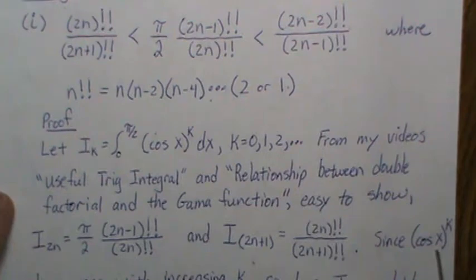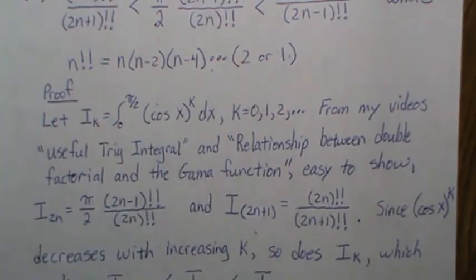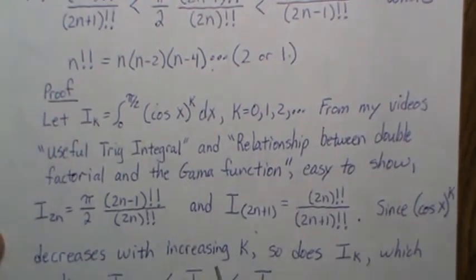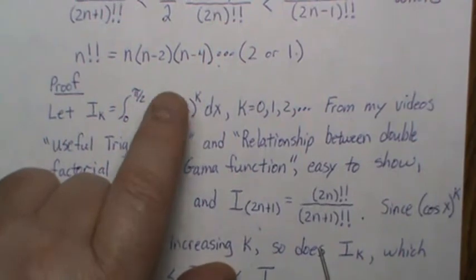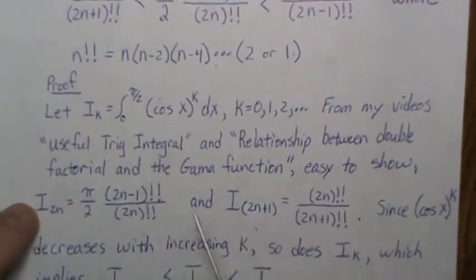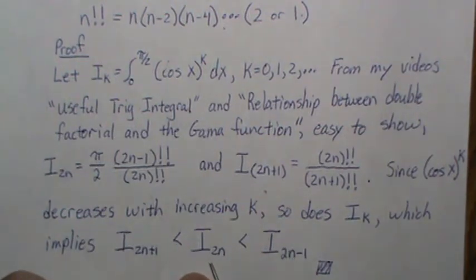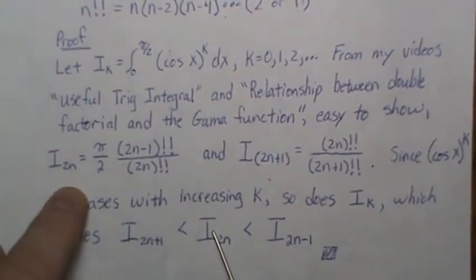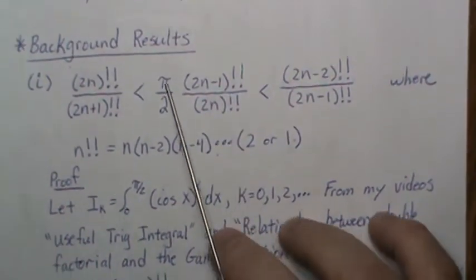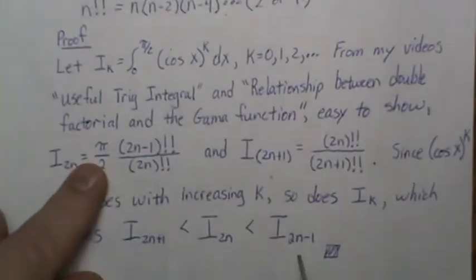Now note that cosine of x raised to the k-th power is a decreasing function in k, because cosine is between 0 and 1 on this interval and raising it to higher powers makes it smaller. So I_k decreases: each successive k makes the integral a little bit smaller. That means I_{2n-1} is bigger than I_{2n}, which is bigger than I_{2n+1}. Substituting in the closed-form expressions for each, the desired double factorial inequality follows directly.